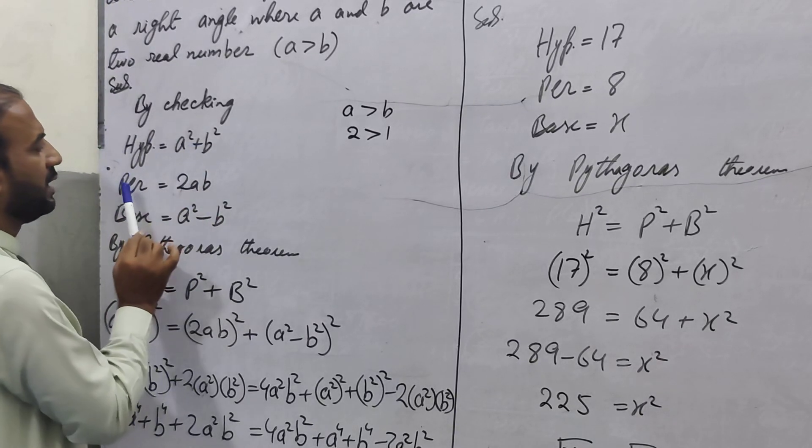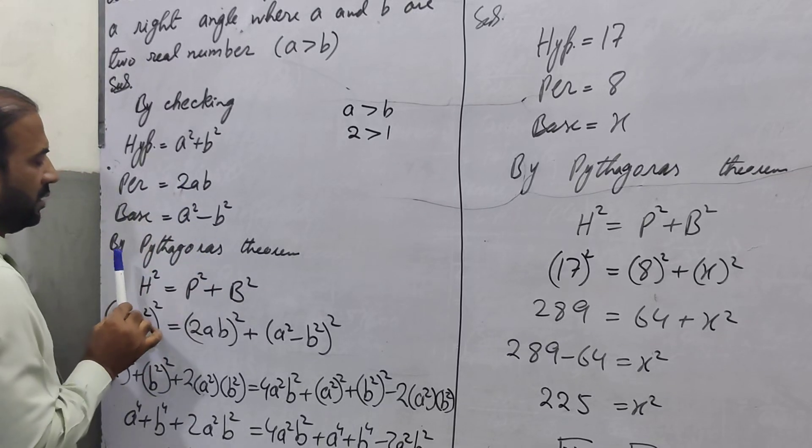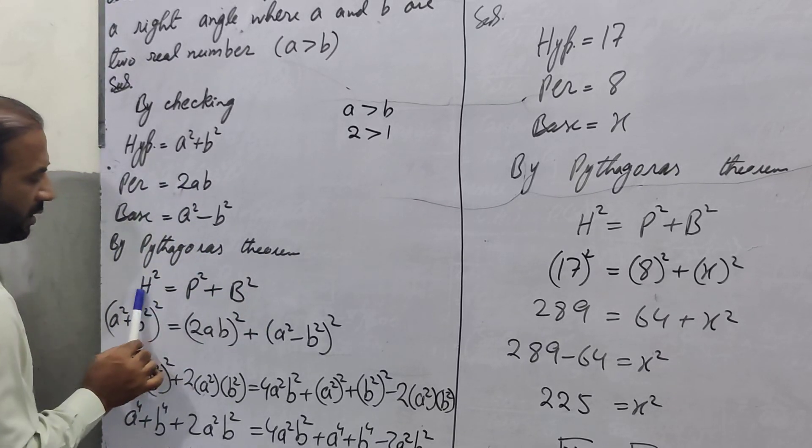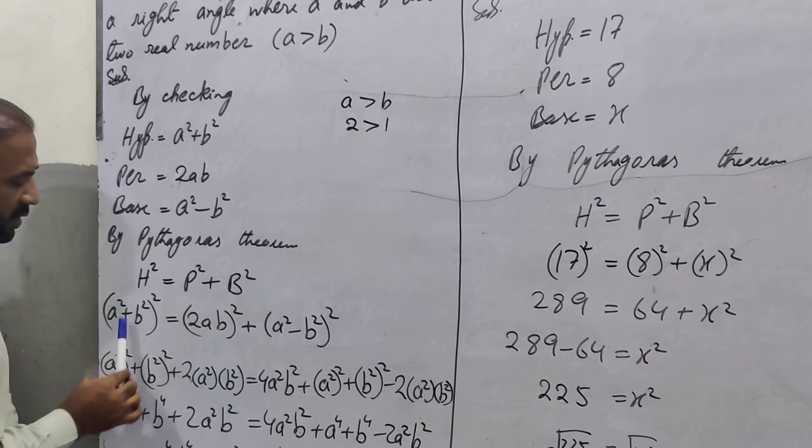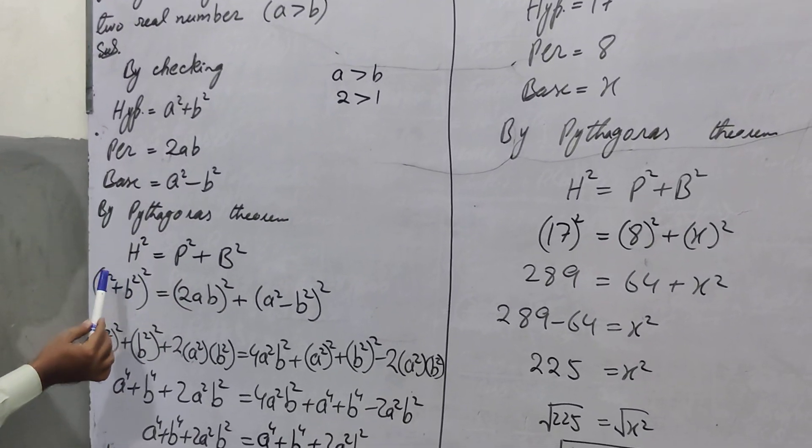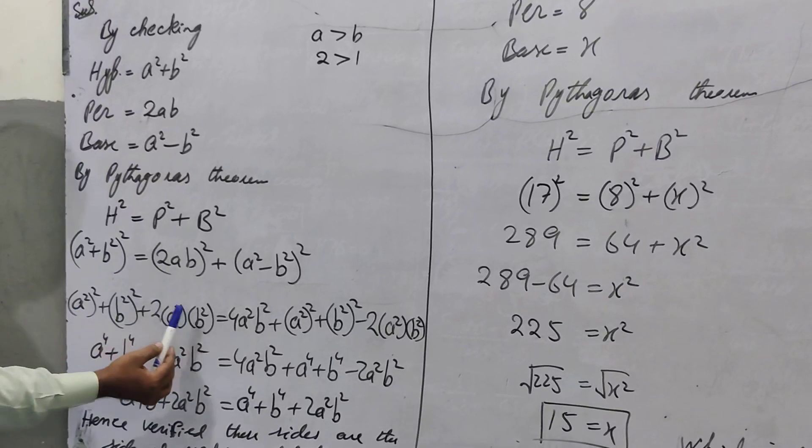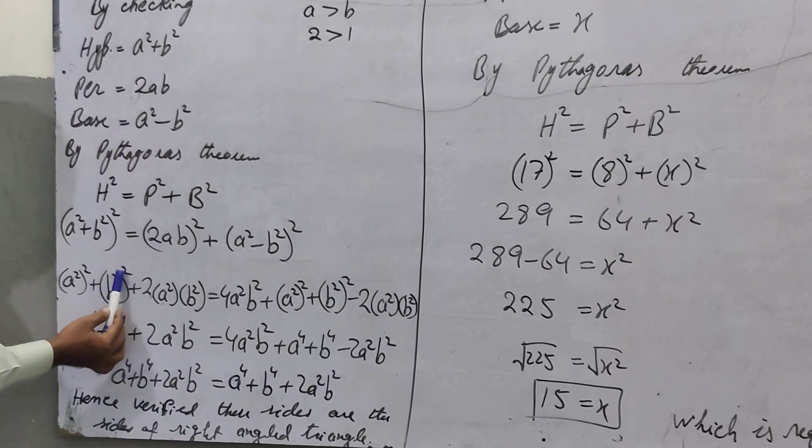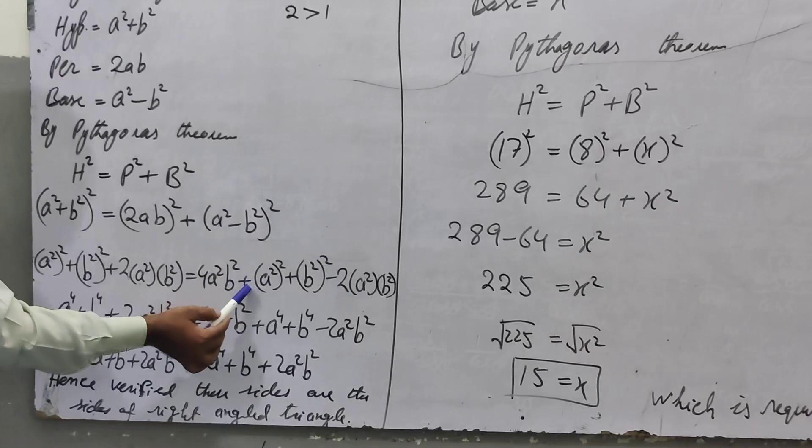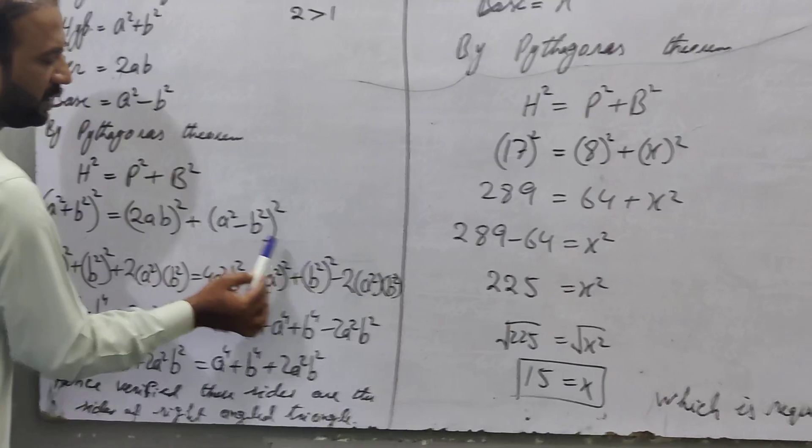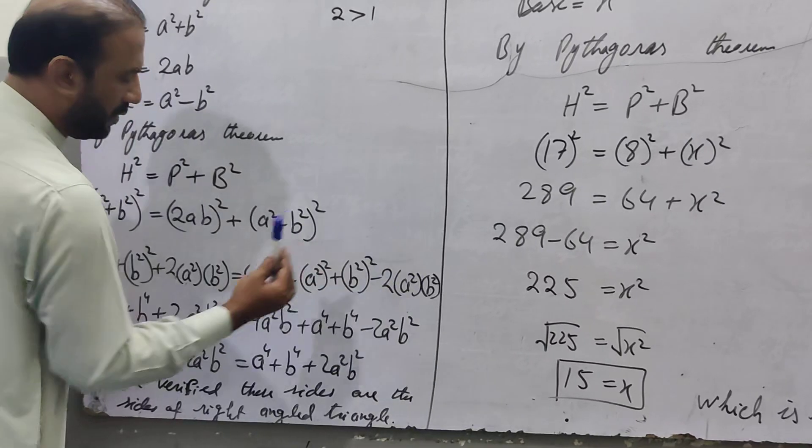So we will call it the hypotenuse. By the Pythagorean theorem, we will call it the hypotenuse.